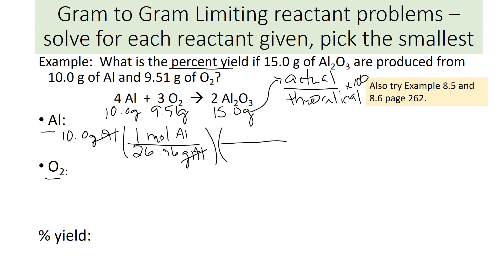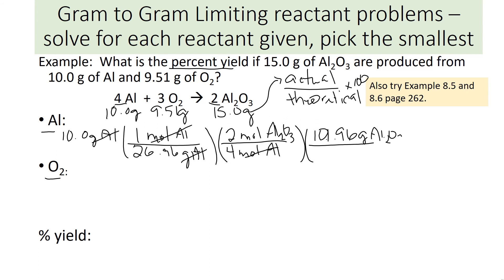Then apply the mole ratio — four moles Al on the bottom to two moles Al₂O₃ on the top. Then multiply by the molar mass 101.96 grams Al₂O₃ per one mole Al₂O₃. On the calculator: 10 divided by 26.98, divided by 2, times 101.96 gives 18.9 grams of Al₂O₃.